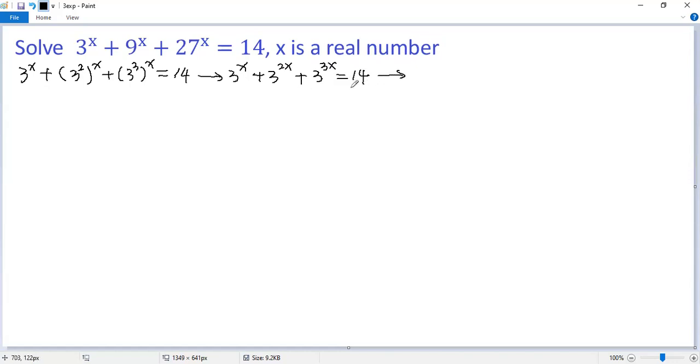Apply the exponent rule again. We get 3 to the power of x plus the second term can be written as 3 to the power of x and then squared. The third term, 3 to the power of x and then cubed equals 14.